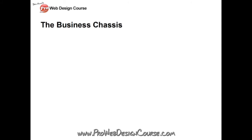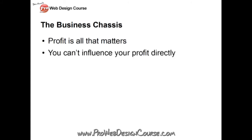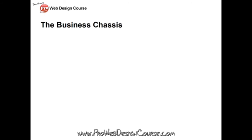The business chassis is a really simple model to help you understand how cash moves through a business and where you get your profit from. Profit is the only thing that matters in business. Turnover means nothing — you can have a turnover of a million dollars a year, but if your costs are more than a million dollars a year, that's bad business. All that matters is profit. Although profit is everything, it's one thing you cannot directly influence — profit is a product of other things, and the business chassis explains what those things are.